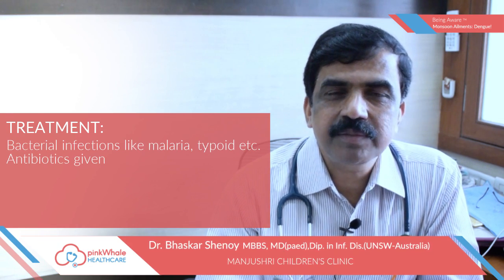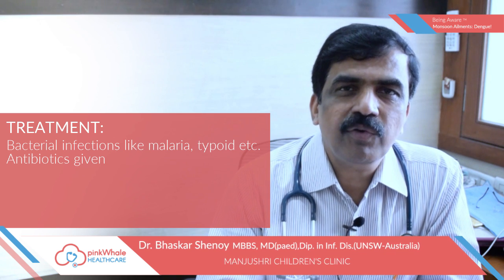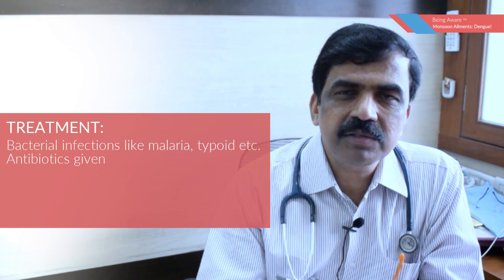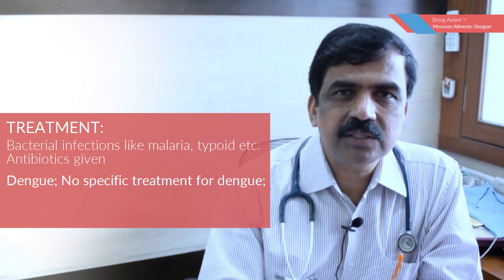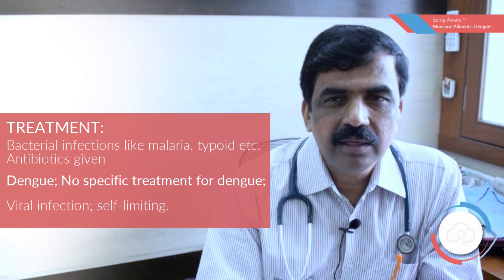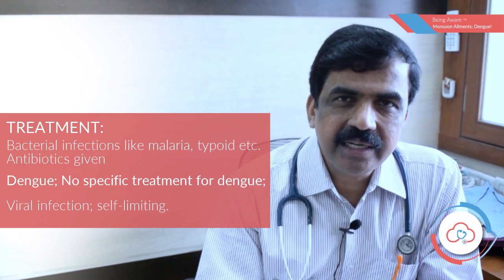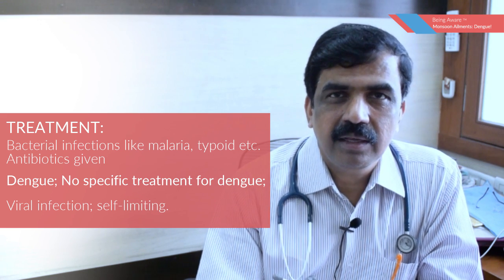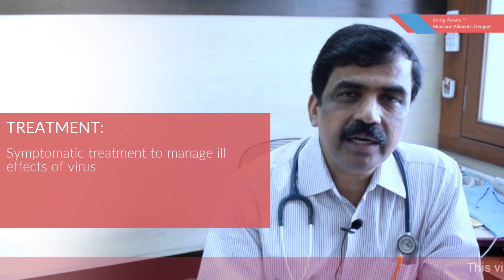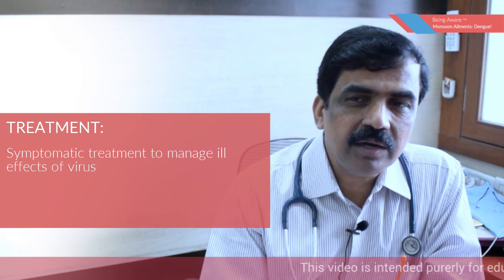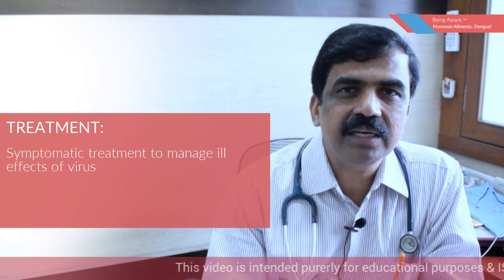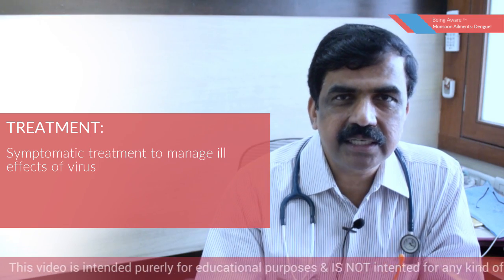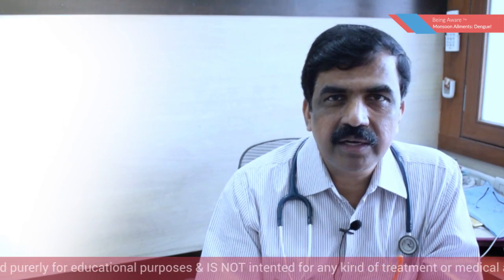How do we treat dengue? There is no specific treatment for dengue. Bacterial infections like typhoid and pneumonia, and conditions like malaria, have specific treatments. Dengue is a viral infection, so there is no specific treatment for this illness. It is a self-limiting illness — the virus enters the body and goes out on its own. What we try to do is not treat the virus, but manage the ill effects that the virus causes to the body. Whatever negative thing the virus does, we try to correct it so that further mishaps won't occur.